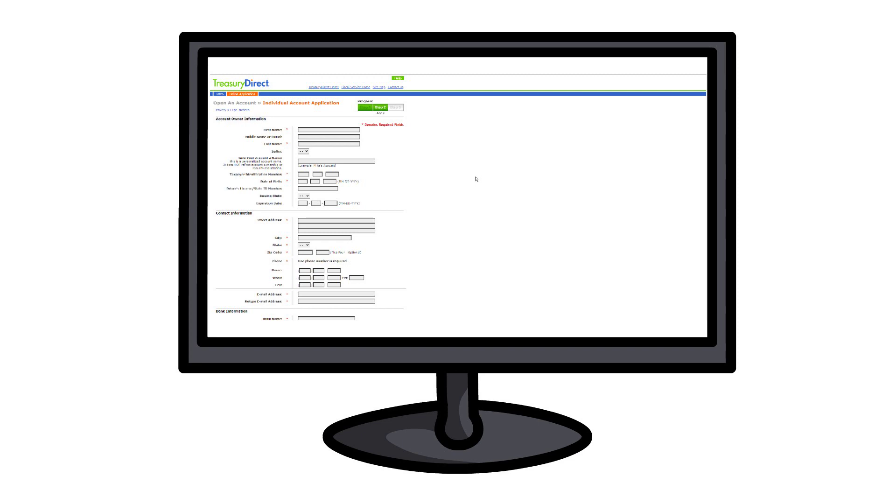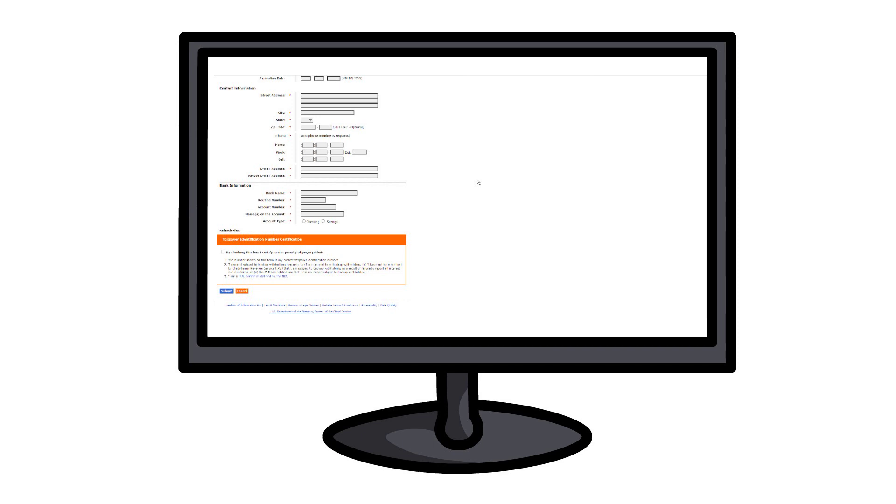In this step, you will enter personal information such as your name, address, and account information. Take care not to misspell the email address here. It's not difficult, so please fill in the blanks one at a time. Scroll down to find a box that needs to be checked. Check it and then click the Submit button.